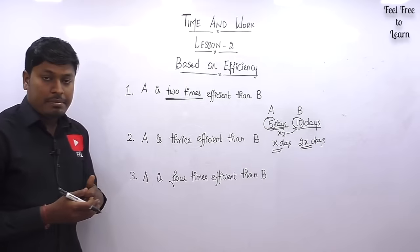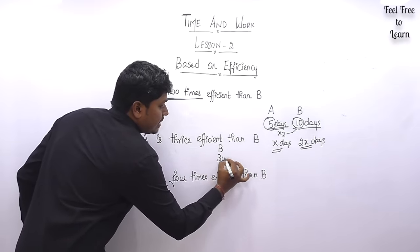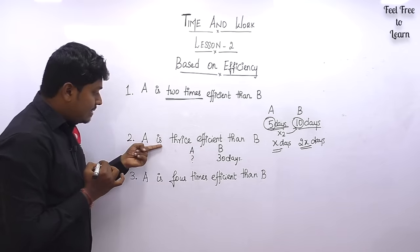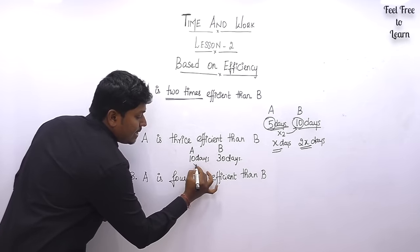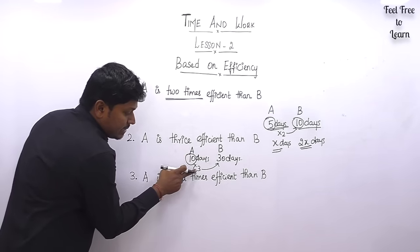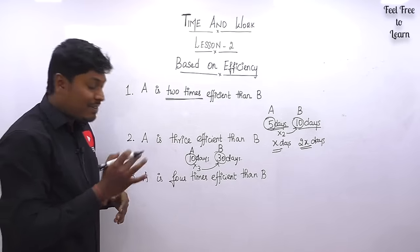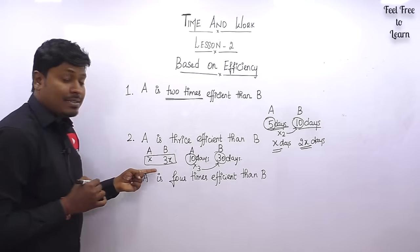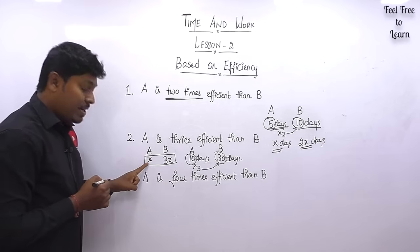Point number two: A is thrice efficient than B, or three times efficient. If B completes a task in 30 days, A will complete it in 10 days, because 10 into 3 equals 30. In terms of x: if A = x then B = 3x. So if x = 5 then B = 15; if x = 10 then B = 30.